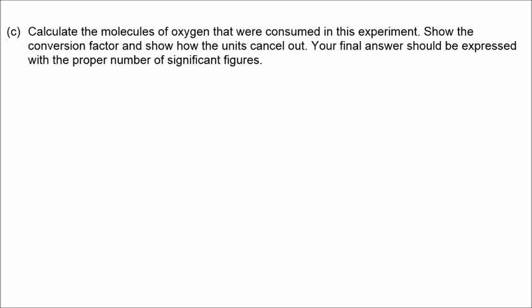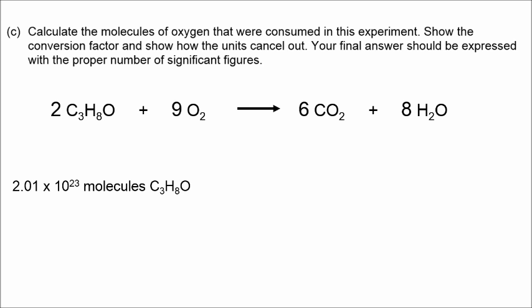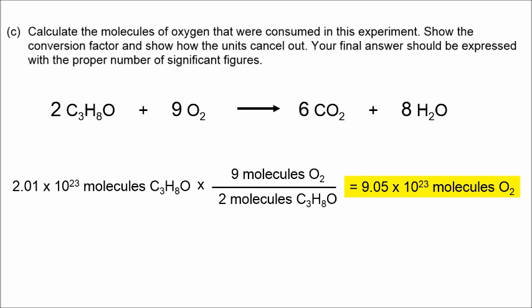In part C, we have to calculate the molecules of oxygen that were consumed. Let's remember our balanced chemical equation. There is a 2 to 9 ratio between molecules of propanol and molecules of oxygen. So there are 9 molecules of oxygen reacting with 2 molecules of propanol. That ratio gives us our conversion factor. Correct answer, rounded off to three significant figures. 9.05 times 10 to the 23rd.